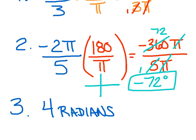And remember, the negative is nothing fancy. It's just telling you you're going to swing clockwise 72 degrees.